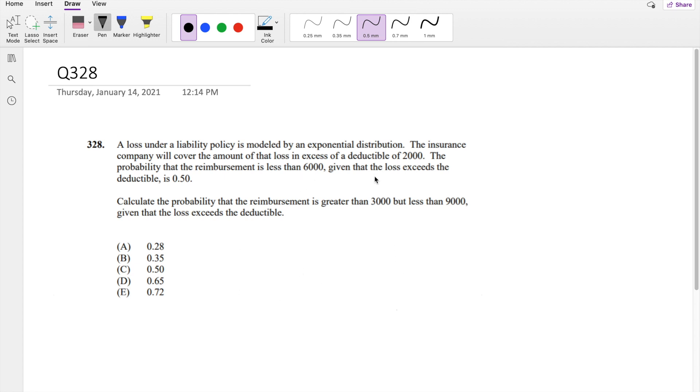They're saying that the insurance company will cover the amount in excess of a deductible of 2,000. The probability of reimbursement, I'm going to denote Y as reimbursement and X as the loss. So probability that Y is less than 6,000 given the loss exceeds the deductible is equal to 0.5.